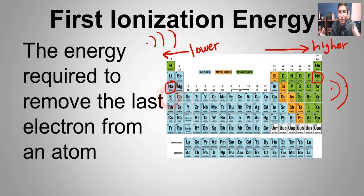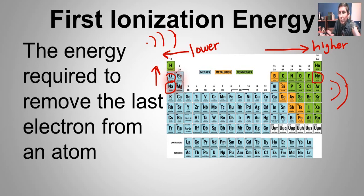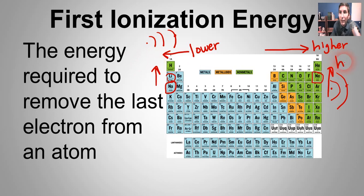Now how about up and down? The atoms at the top of the periodic table only have maybe two or three energy levels, and so the protons are able to pull on those electrons a little more effectively. As it turns out, the ones higher up on the table will have a higher first ionization energy because the electrons are just closer to the nucleus and the nucleus can pull them in more effectively.